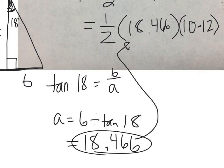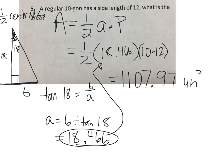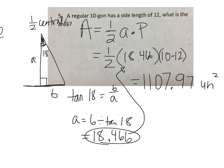When I put all this into my calculator, I get an area of 1107.97 square units. So in order to find the area of a regular polygon, we have to know the apothem length, which goes from the center perpendicular to the side, and we have to know the perimeter.